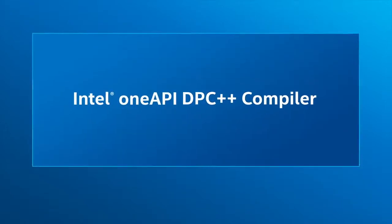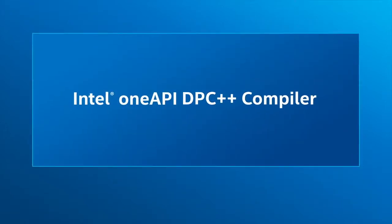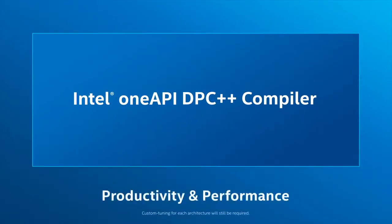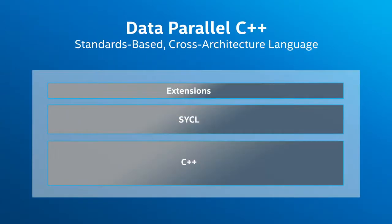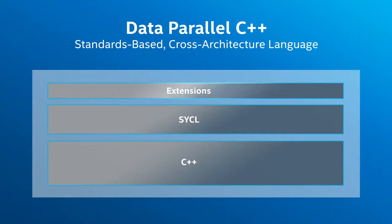The DPC++ compiler is designed to deliver parallel programming productivity and uncompromised performance across CPUs and a variety of accelerators. It builds on Intel's decades of compiler performance leadership and has deep knowledge of Intel hardware. The DPC++ language is based on C++ and incorporates SYCL to support data parallelism and heterogeneous programming. Open extensions will simplify data parallel programming.